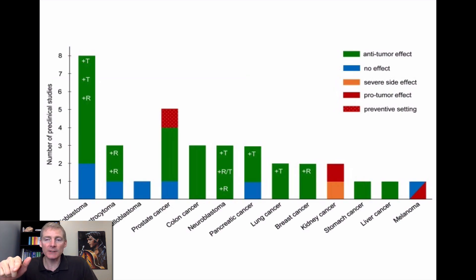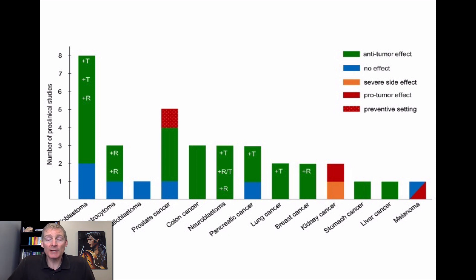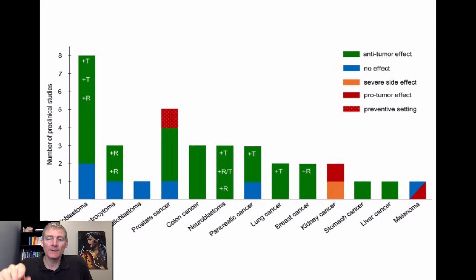This is a series of studies showing different cancers and their reaction to ketosis. Anytime you see green, it shows a study with an anti-tumor effect — ketosis killing cancer. Red means pro-tumor effect, which appears in three of them. Blue is no effect. There are ten greens and three with no green. So ketosis is the best hope for cancer, though it doesn't always work. For example, kidney cancer shows red and orange — no green. But I've personally seen two people reverse their kidney cancer with ketosis.